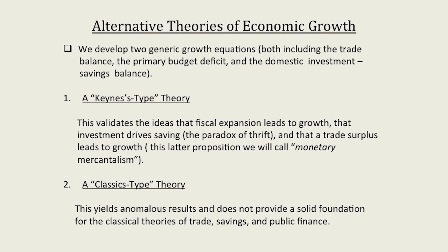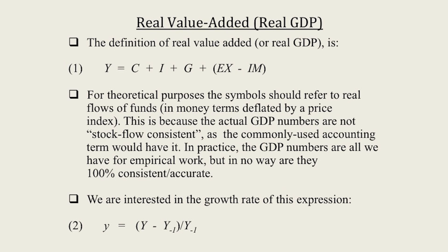We can also identify a classics-type theory, which does have advocates amongst our group here. I would suggest that yields anomalous results and does not provide a solid foundation for the classical theories of trade, savings, or public finance. Real value-added, or real GDP, is given by our usual GDP equals consumption spending, investment spending, government spending, plus net exports.